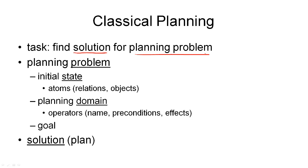The planning problem consists essentially of three things, and those are given to the planner to come up with solutions. The first component of a planning problem is the initial state, which is a set of atoms which relate the objects in our planning problem to each other. This is exactly the type of state we've seen in the STRIPS representation. The next component is the planning domain, which consists of operators described by names, preconditions, and effects.